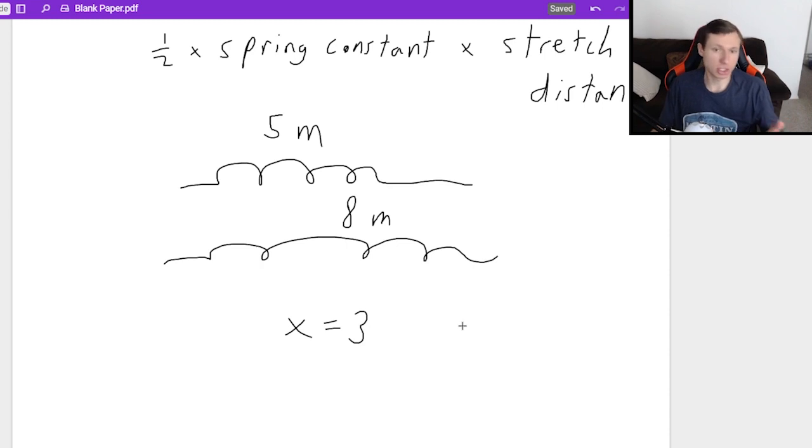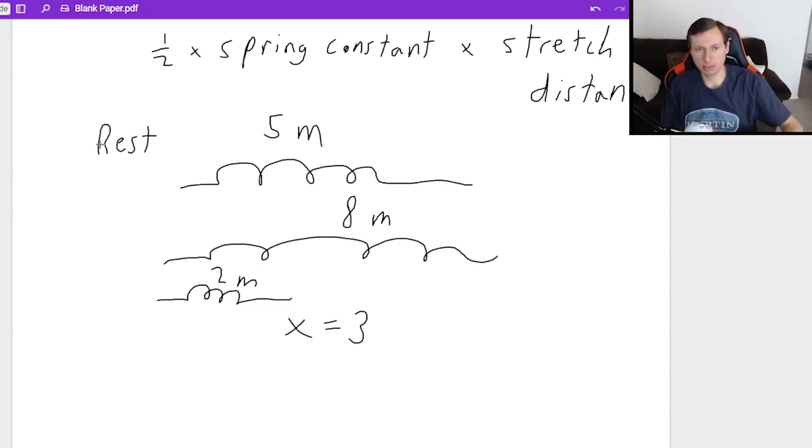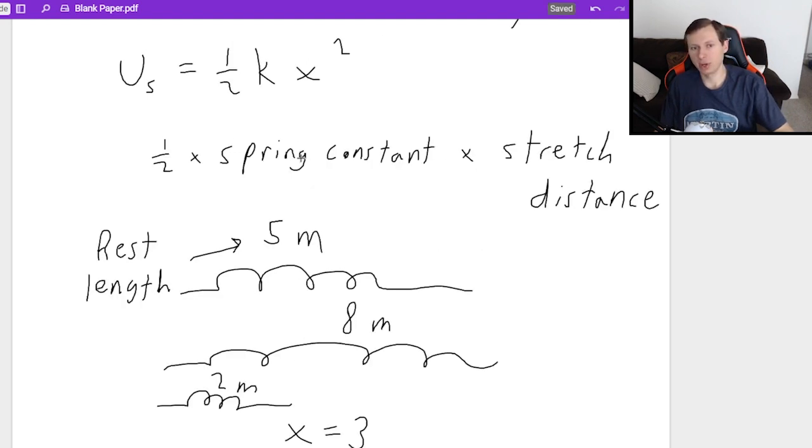By the way, it's not just a stretch. It could also be compressed. You can make it shorter to let's say 2 meters. And that would be 3 as well, because 5 minus 2 is still 3. X is just the stretch distance, how far are you pulling it or compressing it from its initial rest length, where I'm saying in this example, 5 meters is the rest length. And the spring constant.